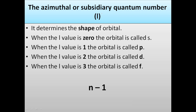The azimuthal quantum number determines the shape of the orbital. It has different values, and we calculate these values using the formula n minus 1, where n is the principal quantum number. For s, which is in the K shell, n = 1, so 1 minus 1 = 0; the azimuthal quantum number for s is 0. For p, n = 2, so 2 minus 1 = 1; the azimuthal quantum number for p is 1.